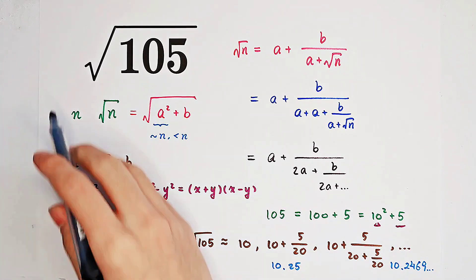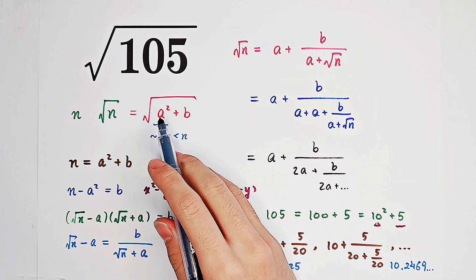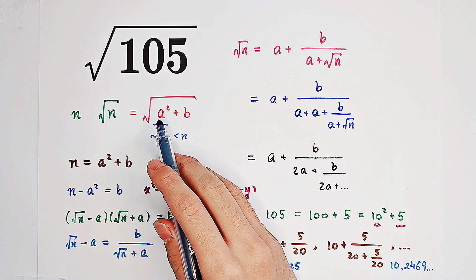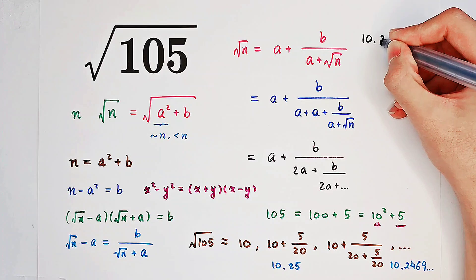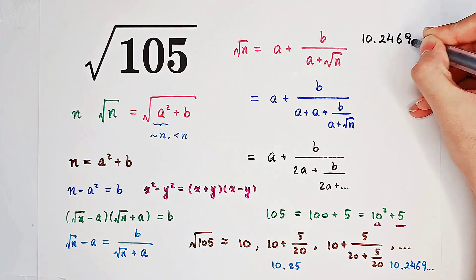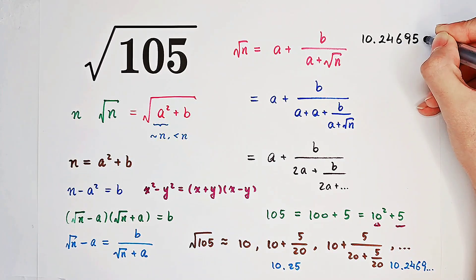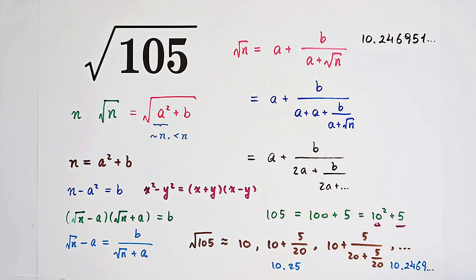Now, press this number on your calculator, square root of 105. And your calculator is gonna tell you it's approximately equal to 10.246951 and so on.